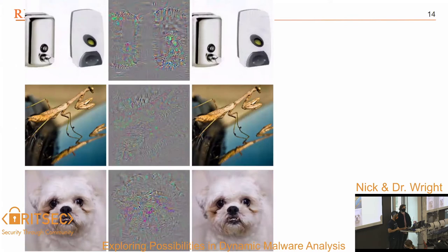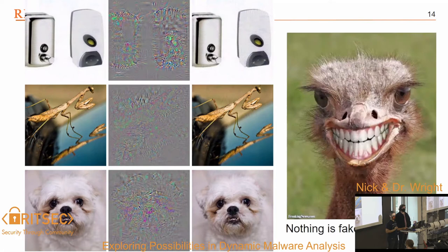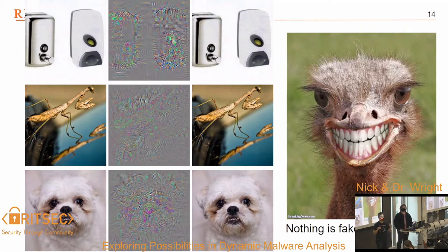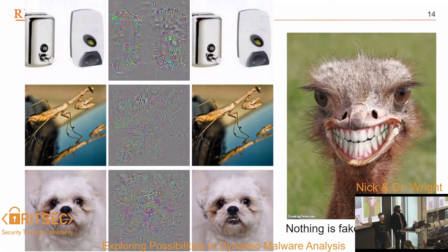And here are more examples where the state-of-the-art classifier also thinks all of these are an ostrich. Not only does it think this is an ostrich, but it goes from being maybe 90% certain it's a dog, to being 99.9% certain it's an ostrich — essentially, that is the most ostrich-looking ostrich it has ever seen.